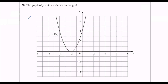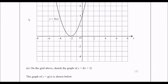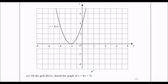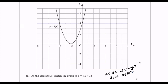The graph y equals f is shown, and we need to sketch the graph of f(x+3). So it's inside the bracket, and inside the bracket changes the x values, so it's going to move side to side — that kind of motion. And it does the opposite; it does not do what it's told, it does the opposite to what it says.